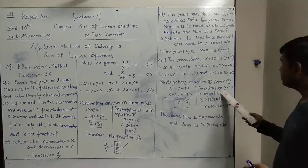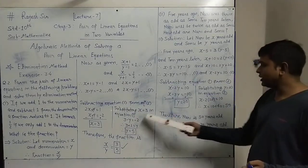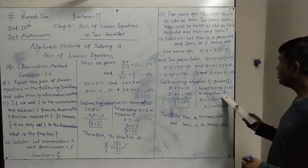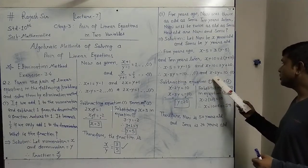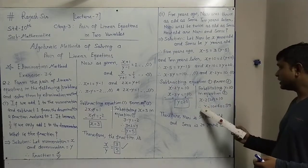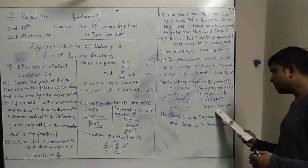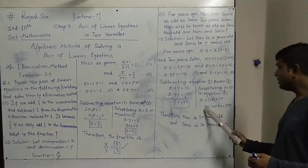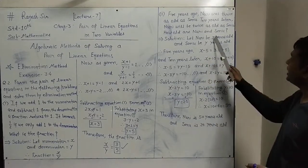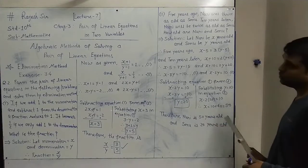Now substituting y = 20 into equation 2: x − 2(20) = 10, so x − 40 = 10, therefore x = 50. So x = 50 and y = 20. Nuri is x = 50 years old and Sonu is y = 20 years old.